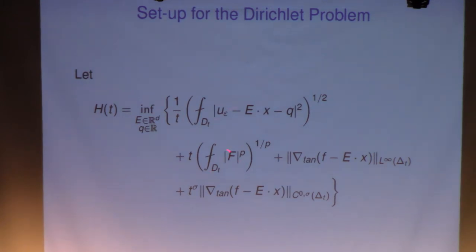If you have a right-hand side, you can put this in here. The LP norm, the LP average multiplied by t, that's the right scale. And then you have to put up terms which involve the boundary data. So you want to subtract a linear function from the boundary data, take the tangential derivative and measure this in L-infinity norm. And then you also want to measure the C-sigma norm of the tangential derivative and properly rescaled. So that is the setup.